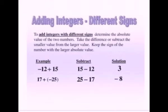In another example: 17 plus minus 25 — both signs are different, so we subtract the smaller value from the greater value. We subtract 25 minus 17 and get the answer 8, but it is minus 8. We write minus 8 because the larger value is 25 and 25 has a negative sign, so the answer is minus 8.